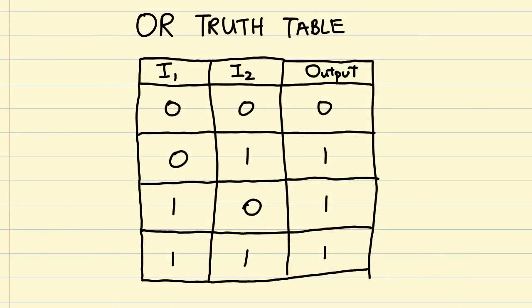Truth table wise, the XOR gate very much resembles that of an OR gate, except for the very last line, where the result becomes false instead of true.